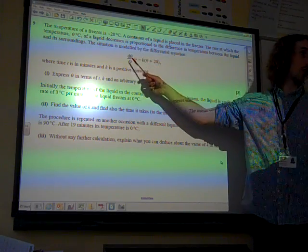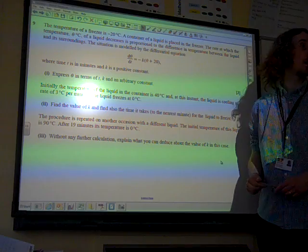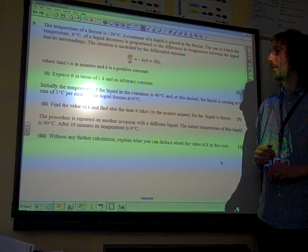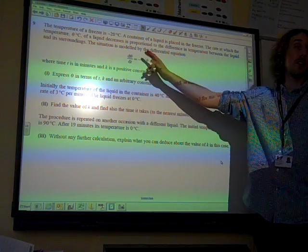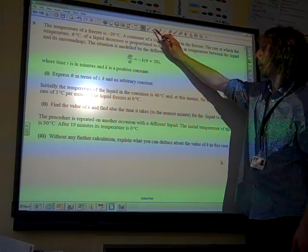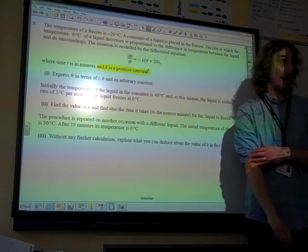This situation is modelled by this differential equation: dθ/dt = -k(θ + 20), where time t is in minutes and k is a positive constant. Notice how this is written, as k is a positive constant. Pick up on this now, because that's going to be important to check if we've got the right answer later on.